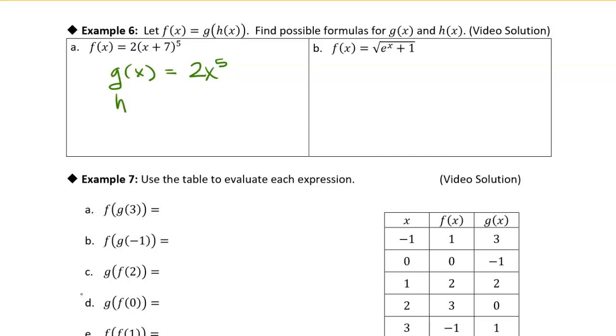So then if we make h of x equal to x plus 7, right, and then feed it into g of x, we'll end up with f of x, which is what we want.